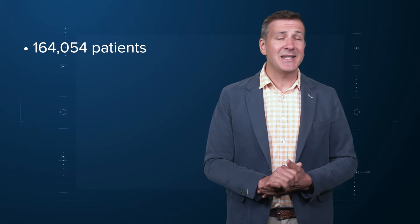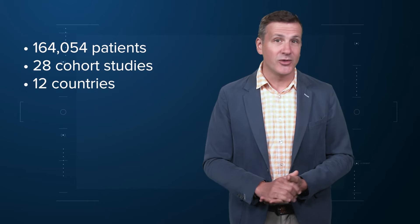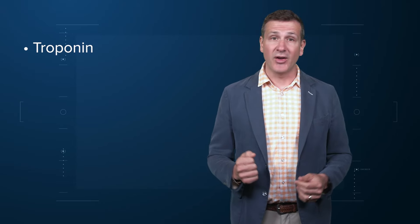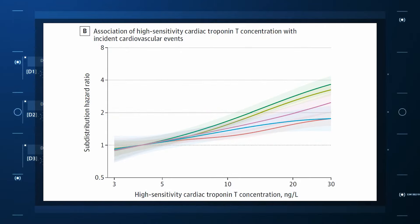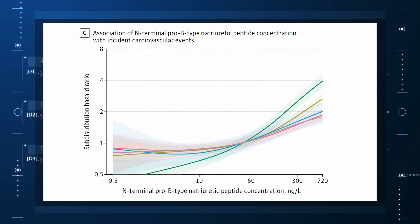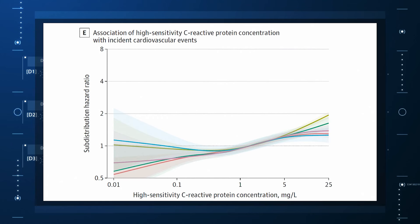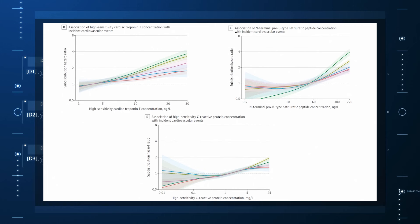The study in question includes 164,054 patients pooled from 28 cohort studies from 12 countries. All the studies measured various key biomarkers at baseline and followed their participants for cardiovascular events like heart attack, stroke, and coronary revascularization. The biomarkers are really the big guns in this space: troponin, a marker of stress on the heart muscle; NT-proBNP, a marker of stretch on the heart muscle; and C-reactive protein, a marker of inflammation. In every case, higher levels of these markers at baseline were associated with a higher risk of cardiovascular disease in the future. Troponin-T shows a basically linear risk with subsequent cardiovascular disease; BNP demonstrates more of a threshold effect where levels above 60 start to associate with problems; and CRP does similarly with levels above one. All findings were statistically significant.